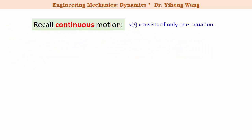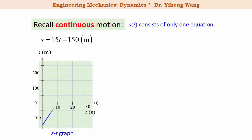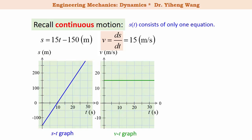For continuous motion, the position function consists of only one equation — for example, s equals 15 times t minus 150, where t is in seconds and s is in meters. Based on this equation we can graph the relation between s and t, giving us the s-t graph. We can differentiate to find that velocity equals ds/dt, which is a constant 15 meters per second, and we can graph this to get the v-t graph showing the relation between velocity and time.